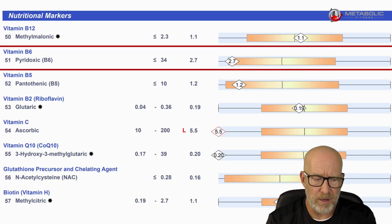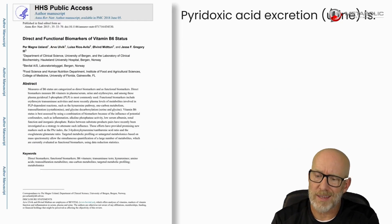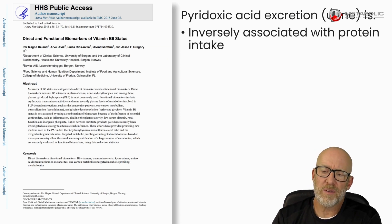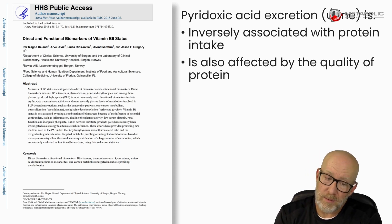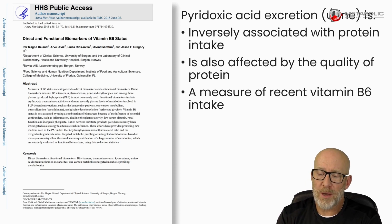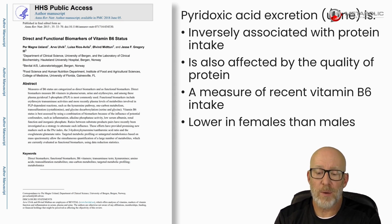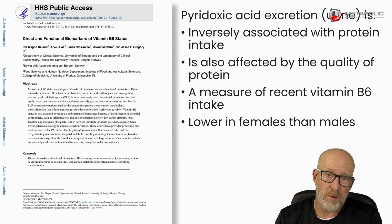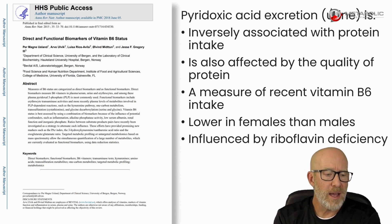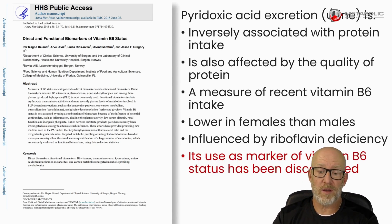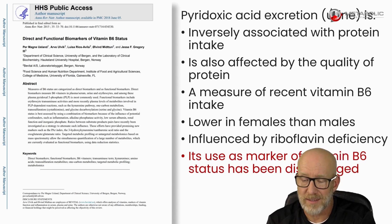Let's take a quick look at another marker: vitamin B6, or pyridoxine, or pyridoxic acid. According to this paper, urinary pyridoxic acid excretion is inversely associated with protein intake — so the more protein you consume, the more it influences your urinary B6 status. It's also affected by the quality of protein, which makes interpretation difficult. It's a measure of recent vitamin B6 intake, which makes sense. However, it's lower in females than males, and most labs don't have sex-specific quantification. It also isn't influenced by riboflavin deficiency, which becomes problematic when trying to identify why it might be elevated or low. Because of all these reasons, this paper says its use as a marker of vitamin B6 status has been discouraged.